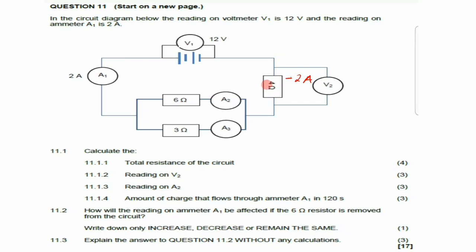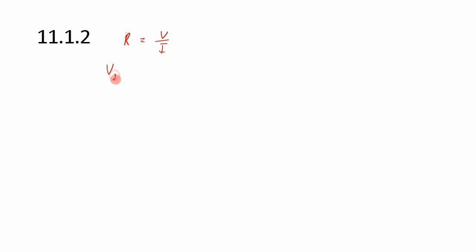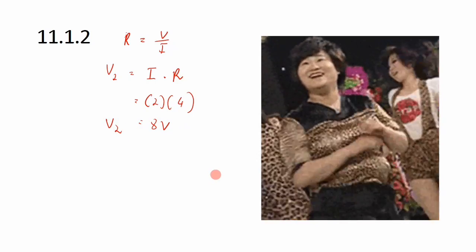We have the resistance and the current, so we can calculate the voltage. Starting with R = V/I and rearranging to V = I × R: the current flowing through the 4 ohm resistor is 2 amperes and the resistance is 4 ohms, so 2 multiplied by 4 gives 8 volts. The reading on V2 is equal to 8 volts.